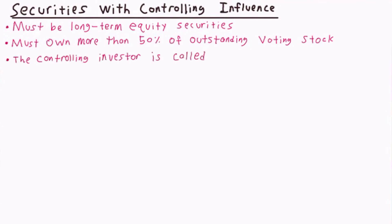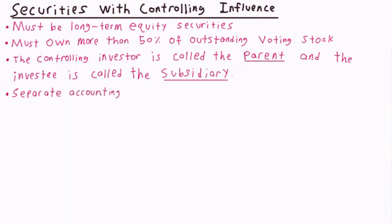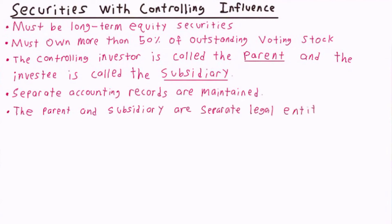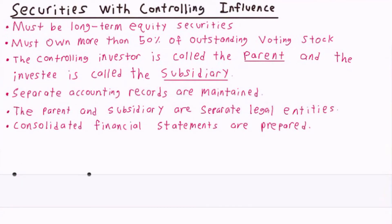When a corporation is in this situation, we call the controlling investor the parent and the investee the subsidiary. The parent and the subsidiary maintain separate accounting records and are still separate legal entities. The parent's investment in the subsidiary is reported in what are called consolidated financial statements, which are financial statements prepared as if the business were organized as one entity. The details of this procedure are discussed in more advanced accounting courses.